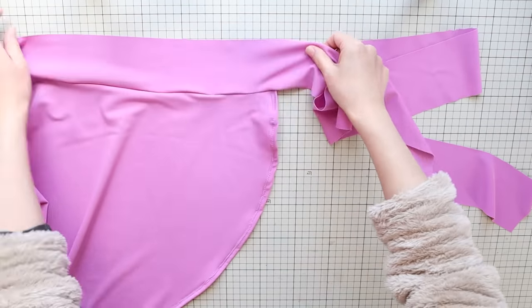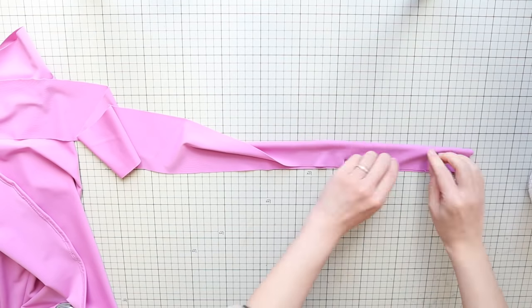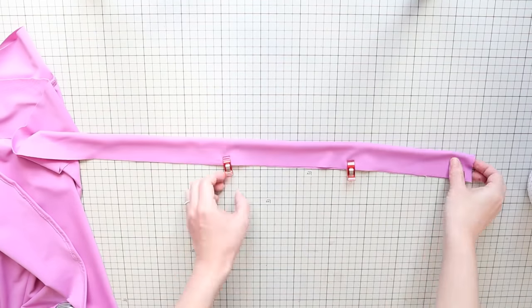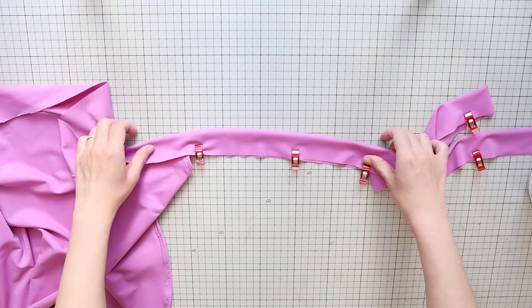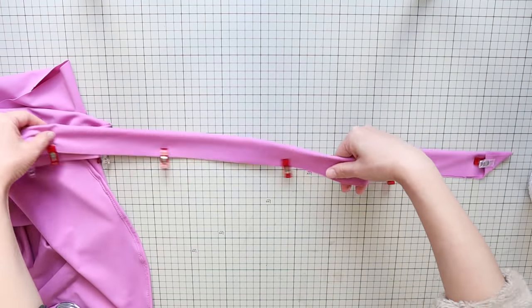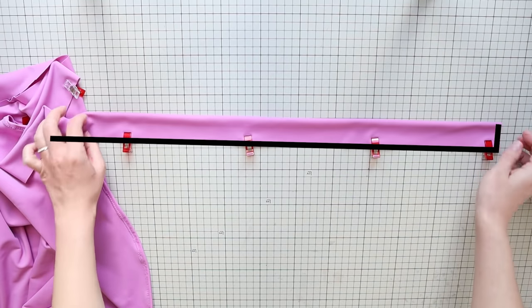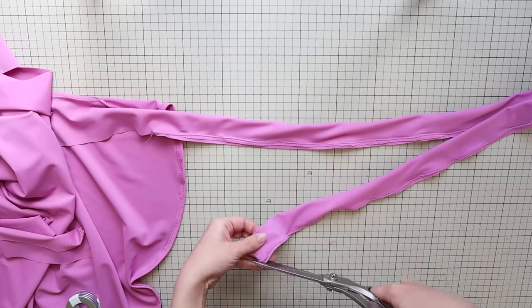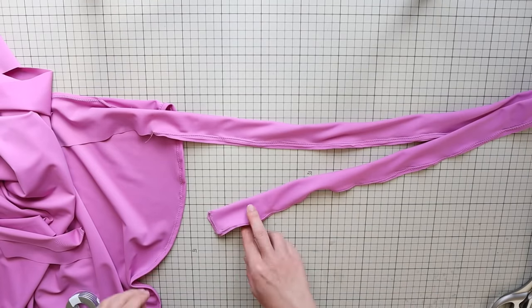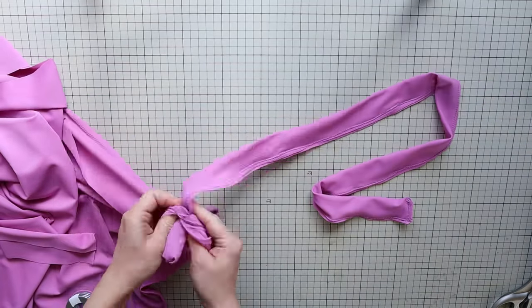Now fold the tie strap sections right sides together and do a zigzag stitch with a 1 centimeter or 3 eighths of an inch seam allowance from the ends to the edge of the hip scarf panel. Trim off the corners and turn them right side out.